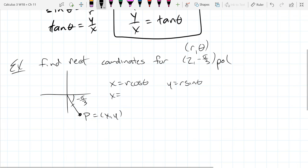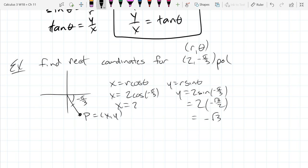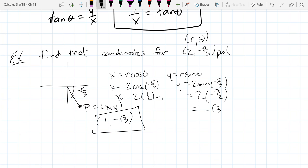So x is 2 times cos negative pi over 3, y is 2 times sin negative pi over 3. Sin negative pi over 3 is negative square root 3 over 2, which is negative square root 3. And cosine negative pi over 3 is 1 half, so x equals 1. There's the rectangular coordinates for our polar point.